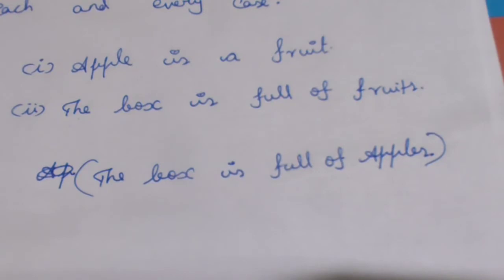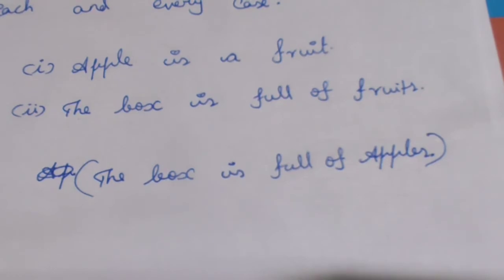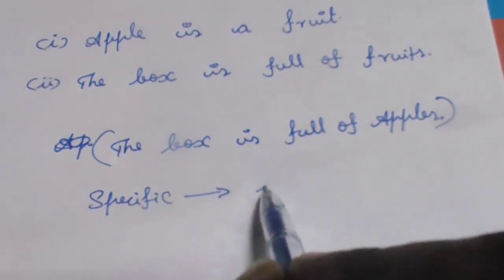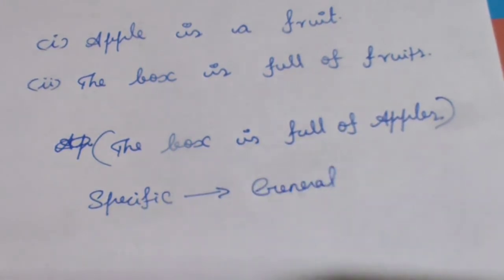For another example: tiger is a wild animal. This forest is full of wild animals. From these two statements, we might say this forest is full of tigers. But the conclusion may or may not be realistically true. This shows inductive reasoning goes from a specific case to a general case.